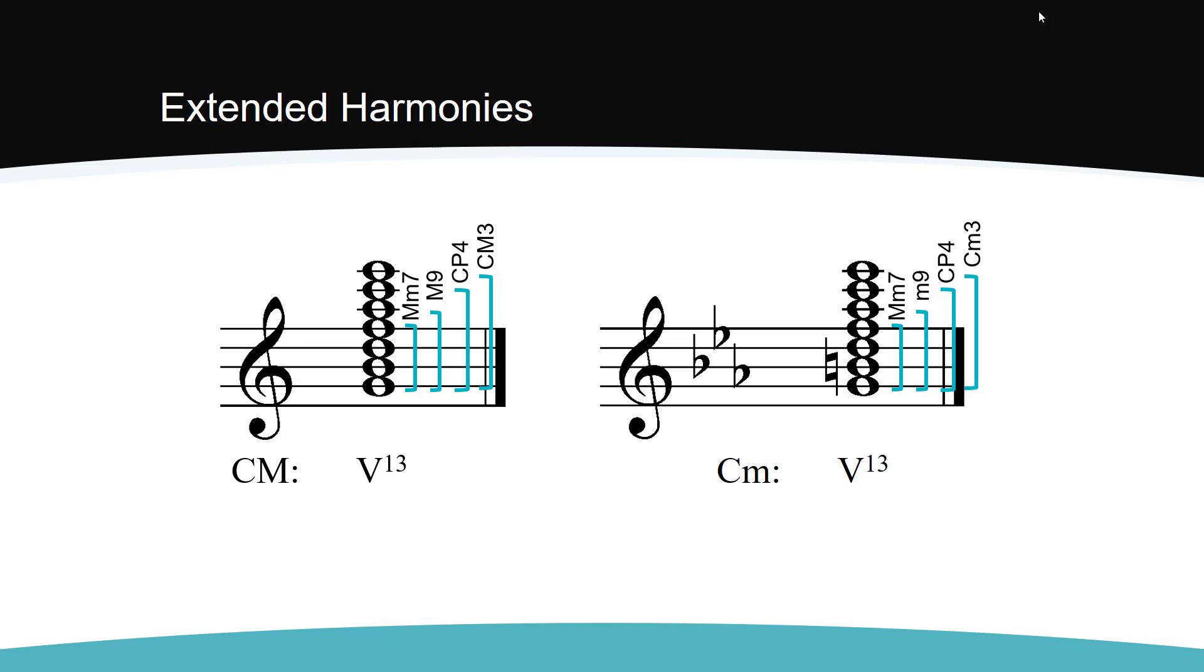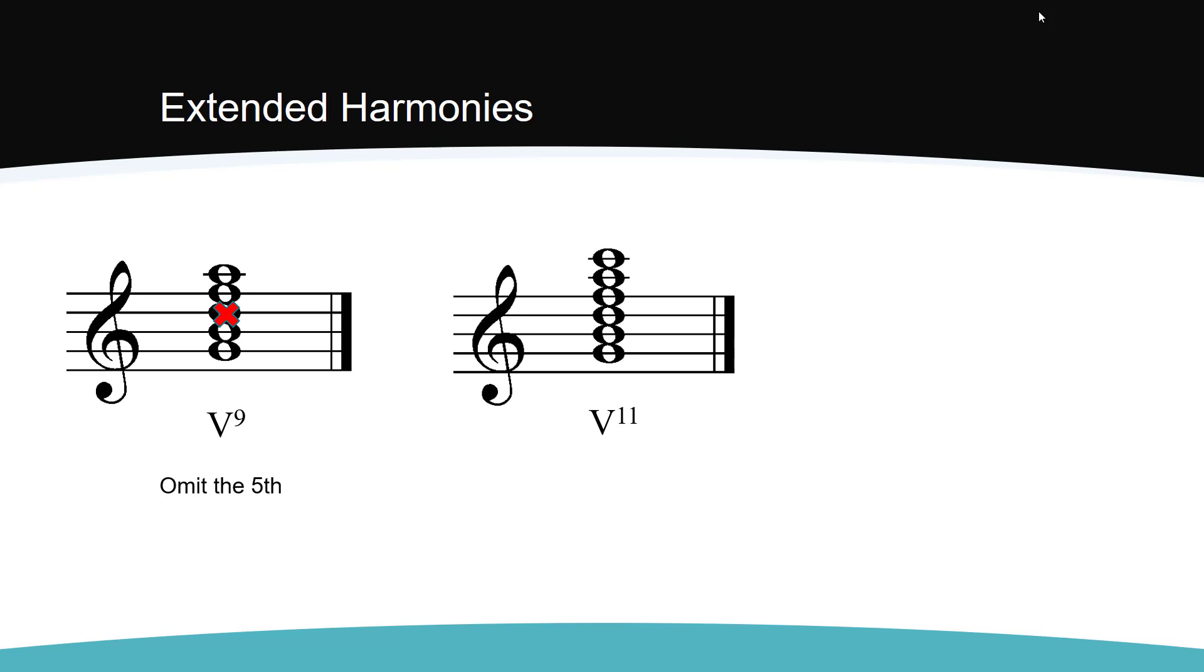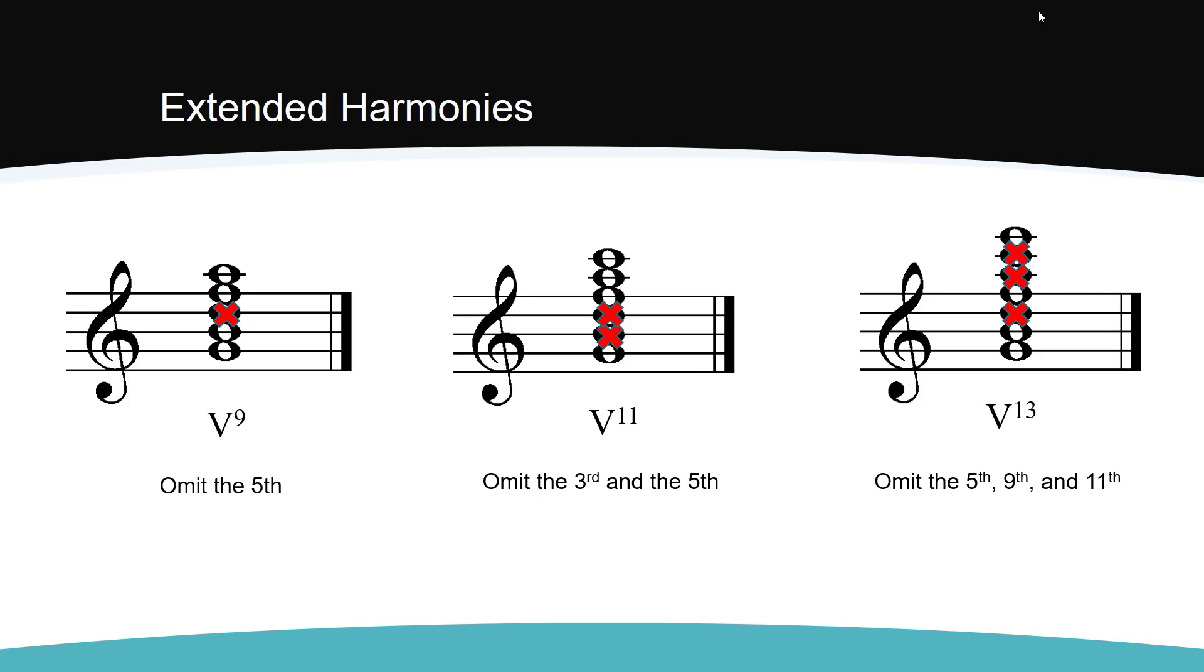When part-writing these chords, you have to omit something. There are too many notes to work with in a 4-voice chorale texture. On a 9th chord, you omit the 5th. On an 11th chord, you omit the 3rd and the 5th. And on the 13th chord, you omit the 5th, 9th, and 11th. Again, these chords retain their function as extended harmonies if the 9th, 11th, or 13th is in the highest voice or has some kind of prominence. Otherwise, they tend to be analyzed as chords with non-harmonic tones.